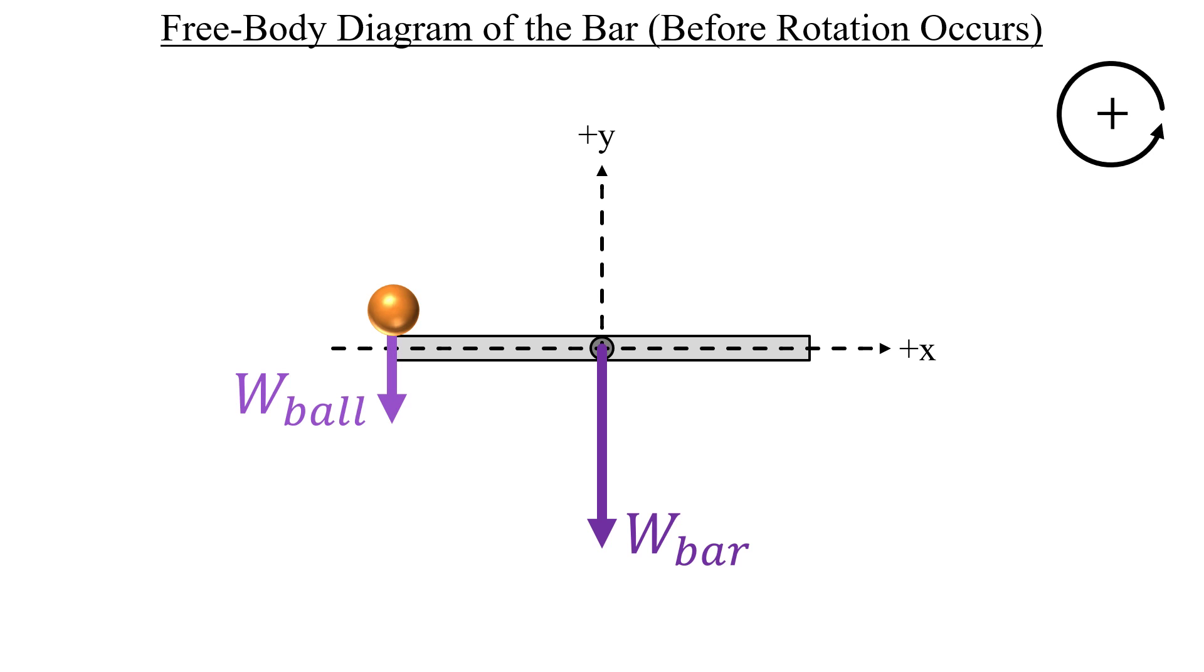The weight of the bar won't cause any rotation since the line of action for that force goes directly through the origin where the rotational axis is located. The weight of the ball however does cause a rotation and the lever arm corresponding to that force will be this distance here in the blue.